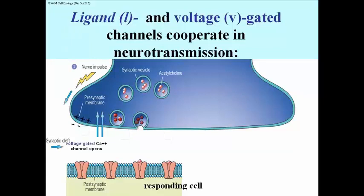It's a voltage-gated calcium channel that opens up in response to that little electrical jolt that was propagated down the axon. The calcium enters the cell, interacts with synaptic vesicles, causing them exocytotically to fuse with the membrane of the nerve ending.